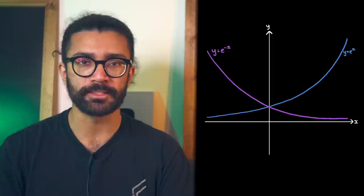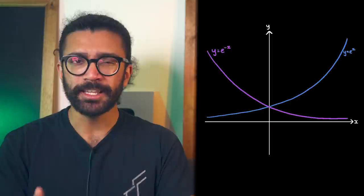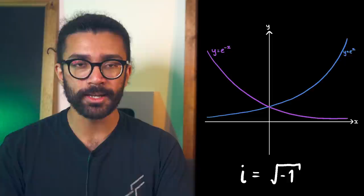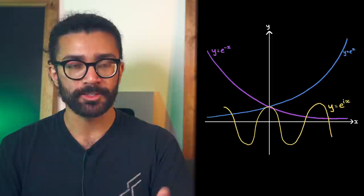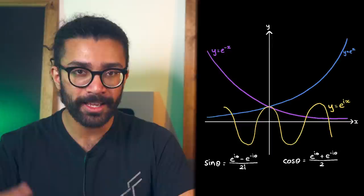Well the thing is, this quantity i, which is the imaginary number taken to be the square root of negative 1, is what turns this quantity into a wave. In fact, sinusoidal functions, such as sine and cosine, can be written in terms of the exponential function with i in the exponent. More information on this in the description below, and I'll make a video on this at some point as well.